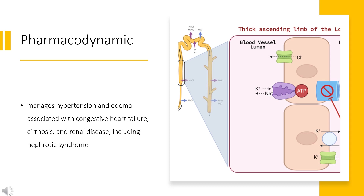Pharmacodynamics: Furosemide manages hypertension and edema associated with congestive heart failure, cirrhosis, and renal disease, including nephrotic syndrome. Furosemide is a potent loop diuretic that works to increase the excretion of Na+ and water by the kidneys by inhibiting their reabsorption in the proximal and distal tubules, as well as the loop of Henle. It directly acts on the cells of the nephron and indirectly modifies the content of the renal filtrate. Ultimately, furosemide increases the urine output by the kidney.